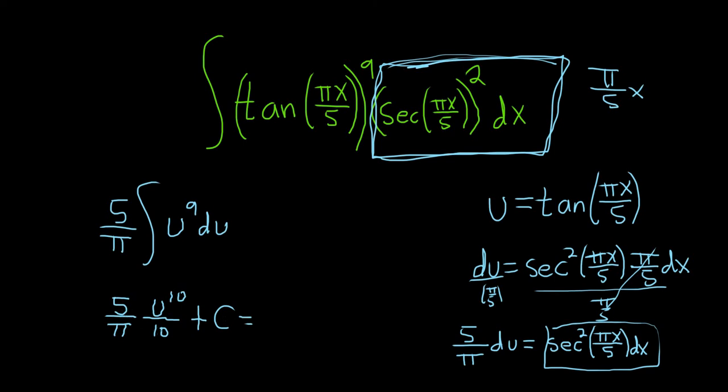This is equal to, 5 over 10 is 1 half. So it'll just be 1 over 2 pi. And then tangent. So tangent of pi x over 5. And that's the 10th power. And then plus our c. What a weird answer. It's just a really funky looking answer. The 1 over 2 pi.